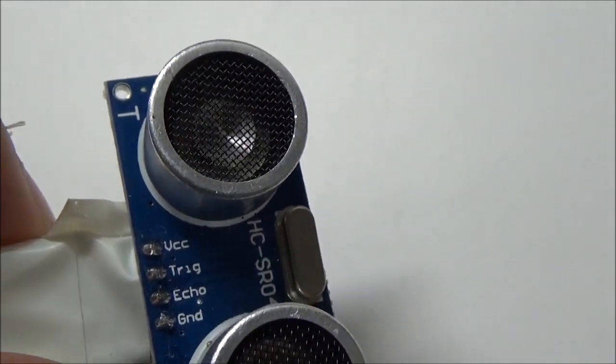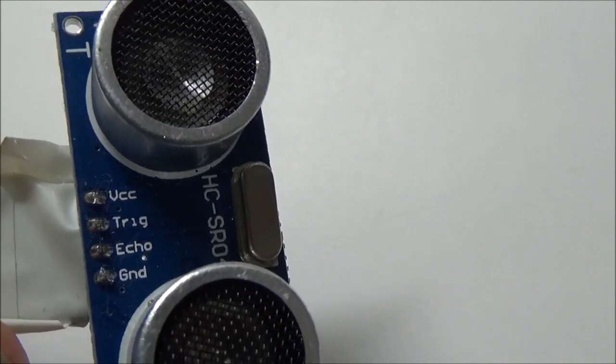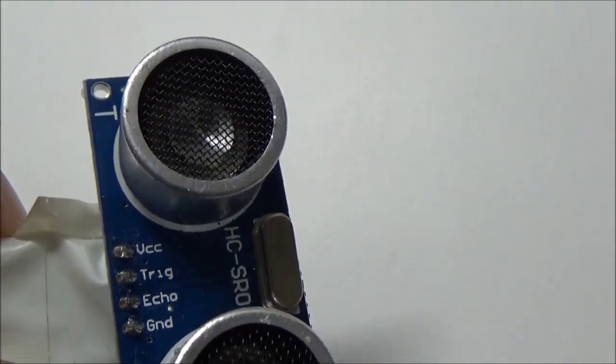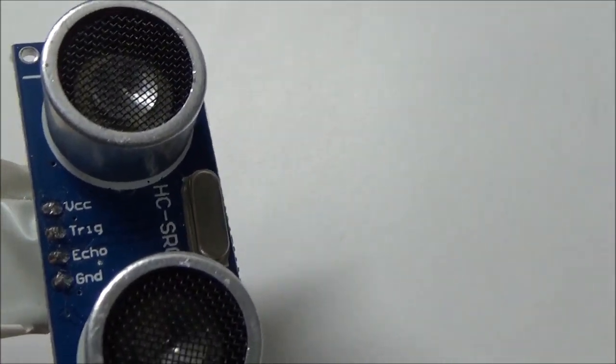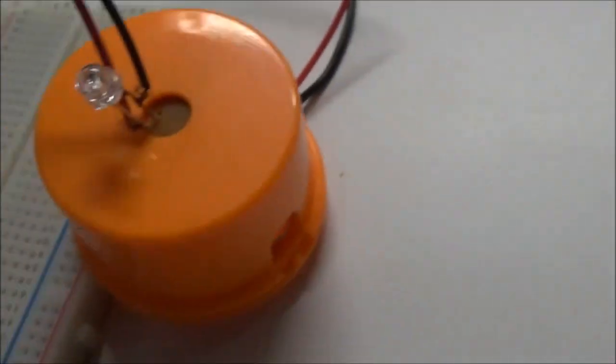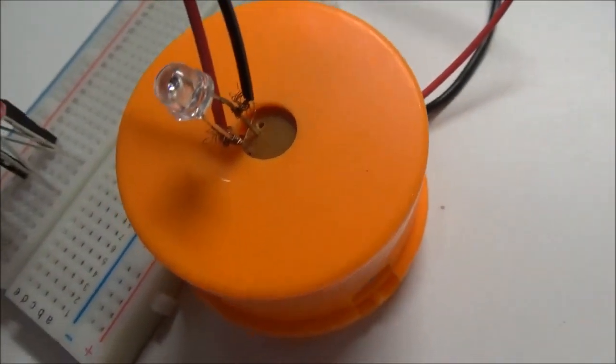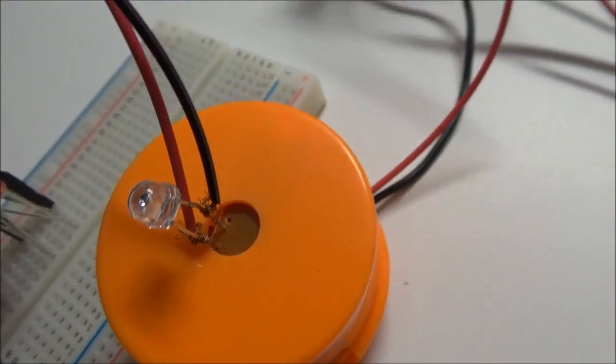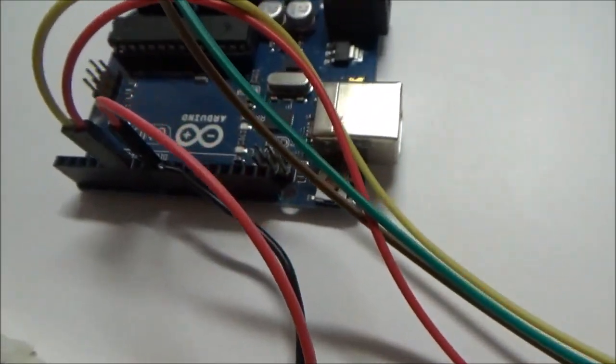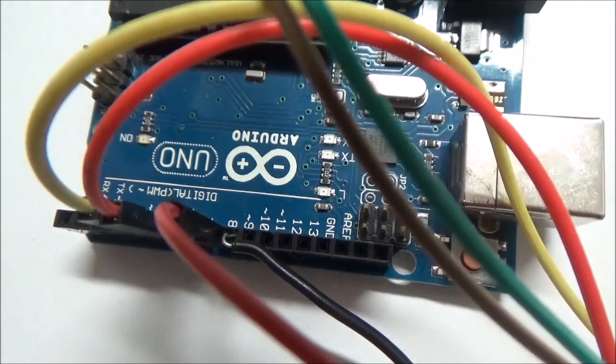I've connected the echo pin to pin number 6 on the Arduino. The ground terminal has been connected to the ground terminal of the Arduino as well. Also, I have connected the positive terminal of this little speaker unit and the LEDs to pin number 8 on the Arduino, and I've connected the negative rail to pin number 9 on the Arduino.